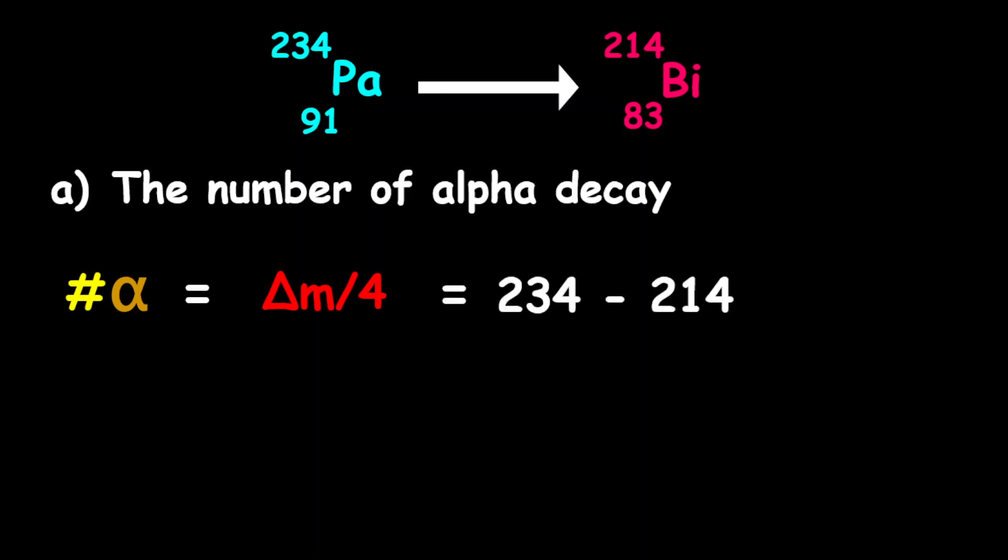Therefore, the change in mass is 234 minus 214 divided by 4. Now that equals to 20 divided by 4 equals to 5 alpha decays. All right, let's put that aside.